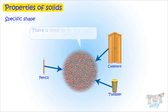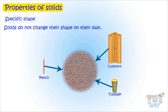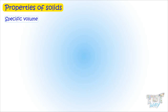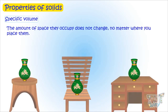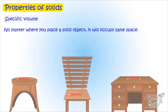There is little or no space between particles of solids, and the particles cannot move — that is why solids do not change their shape on their own. Next property is specific volume: solids have a specific volume, meaning the amount of space they occupy does not change no matter where you place them. The same pencil placed anywhere will always occupy the same space, so it has specific volume.